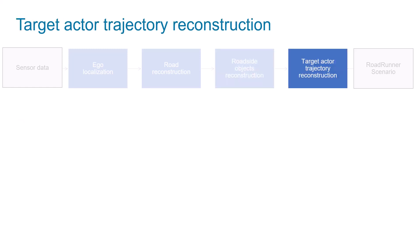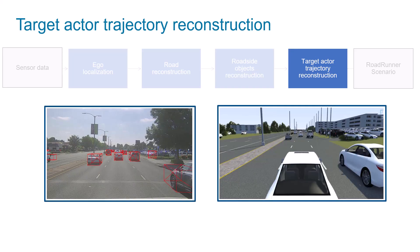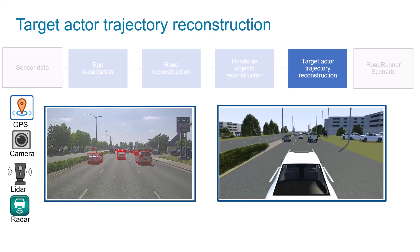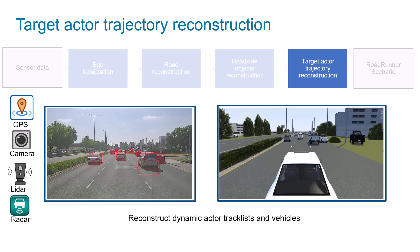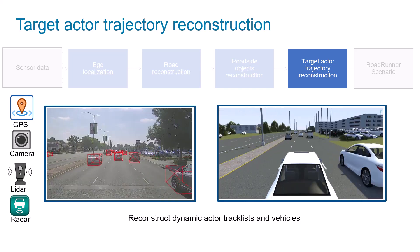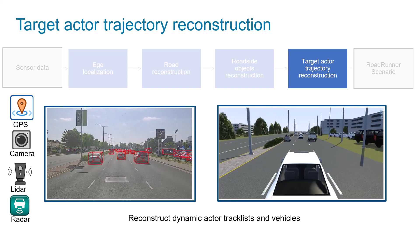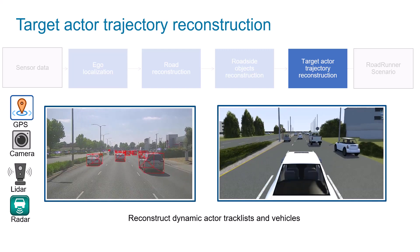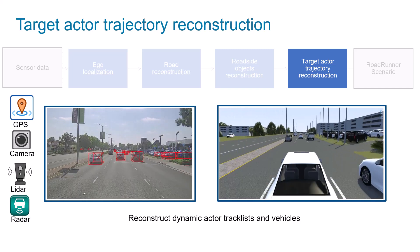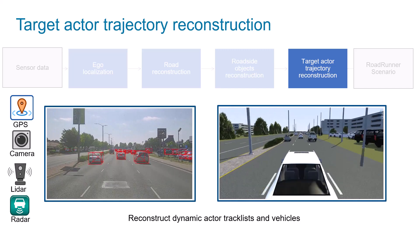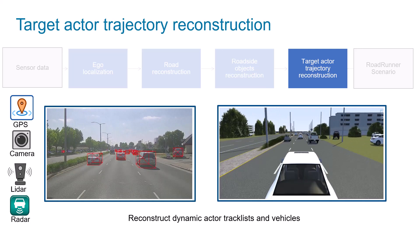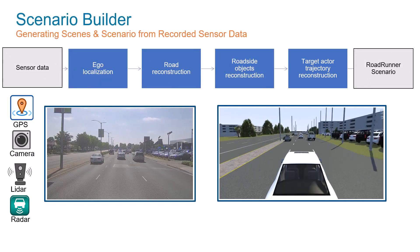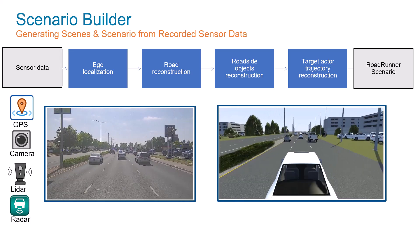Target actor trajectory reconstruction focuses on extracting non-ego actors such as vehicles from sensors like camera, lidar, radar, or any combination thereof, or even using processed object lists. Lidar sensor data enables the extraction of objects from all sides of the ego vehicle, while radar sensor data can capture farther objects. Camera sensor data helps identify object classes such as cars and trucks. We encourage you to try the Scenario Builder workflow with your own dataset.